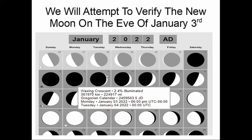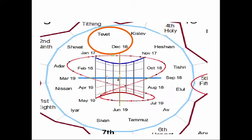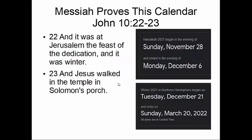We have to work off of observation, not calculation. If we do see the new moon on the 3rd, that evening will actually start the first day of the month, which will end on the next day at sunset on the 4th. We're anticipating that the 4th will be the first day of the 10th month, the month Tevet. Going back to the data sheet: we look for the new moon that falls after December the 18th, and again it points us to Tevet.